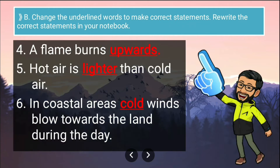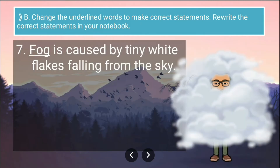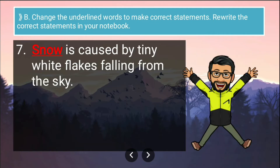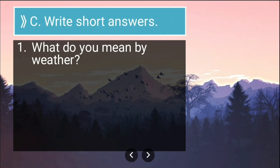Continuing the corrections — fourth: 'a flame burns downwards' — correct version is 'a flame burns upwards'. Fifth: 'hot air is heavier than cold air' — correct version is 'hot air is lighter than cold air'. Sixth: 'in coastal areas hot winds blow towards the land during the day' — correct version is 'in coastal areas cold winds blow towards the land during the day'. Seventh: 'fog is caused by tiny white flakes falling from the sky' — correct version is 'snow is caused by tiny white flakes falling from the sky'.